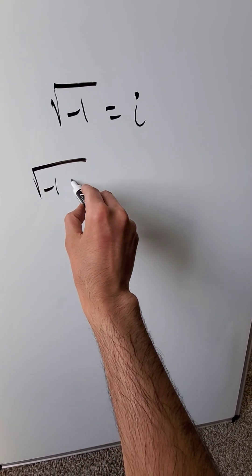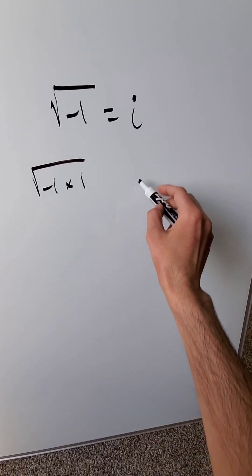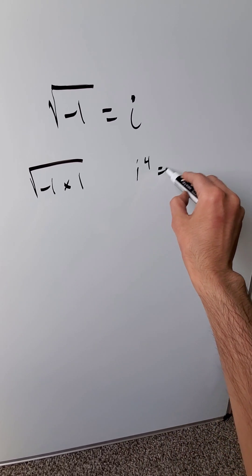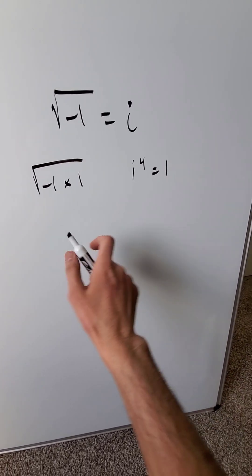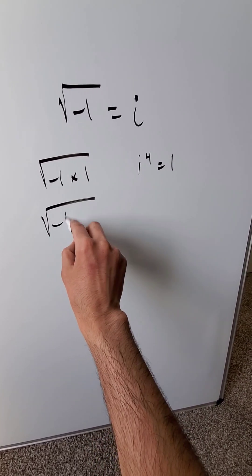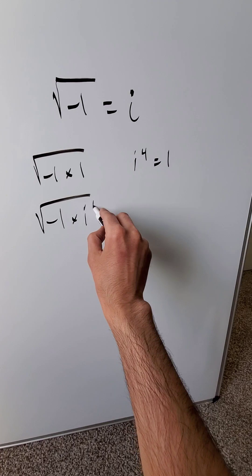Minus 1 is the same thing as minus 1 times 1. Think about imaginary number i to the 4 is equal to 1. It's an imaginary number, a fact you know from pure calculus. Bring it in right here. We're looking at minus 1 times i to the power of 4.